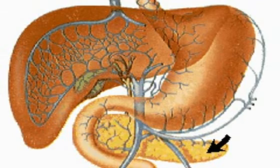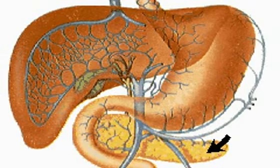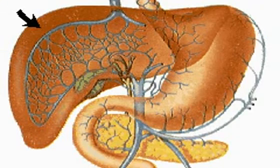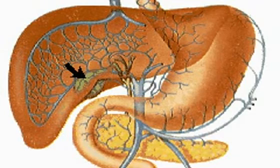The pancreas also manufactures hormones which regulate the blood sugar level. From the small intestine, the digested food is received by the liver, which manufactures bile for the gallbladder. The gallbladder stores and discharges the bile, which helps to break down fats into minute droplets.